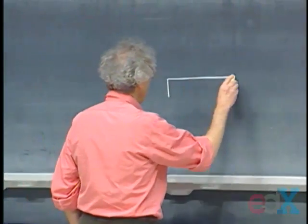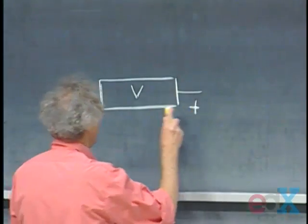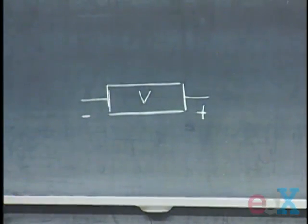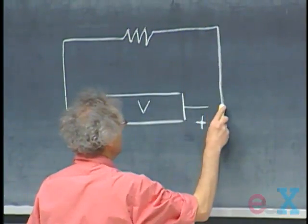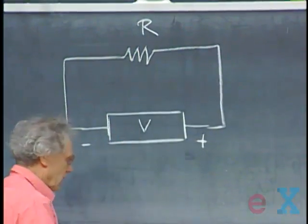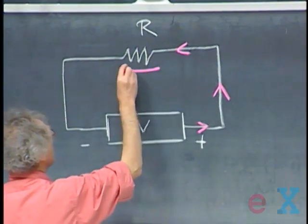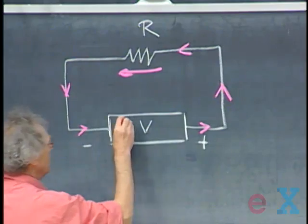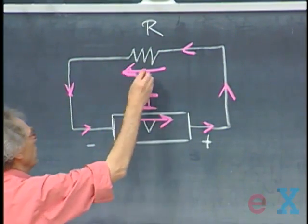We have often talked about power supplies, which are devices that maintain a constant potential difference. Here we have such a power supply with potential difference V — this is the plus side and this is the minus side. I'm going to connect a resistor R here, and as a result the current will start to flow in this direction through the circuit. Through the resistance, the current flows in this direction.